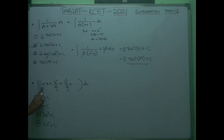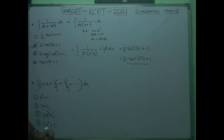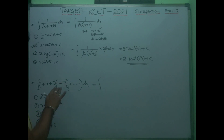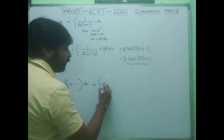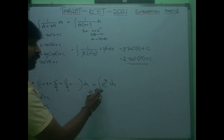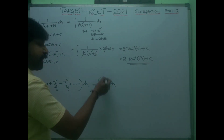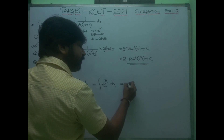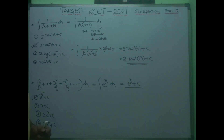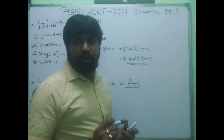Next model: integral of (1 + x + x²/2! + x³/3! + …) dx. This is very easy once you recognize the expansion. 1 + x + x²/2! + x³/3! + … is the expansion of e^x. So the integral is ∫e^x dx = e^x + C. The first option is the correct answer.